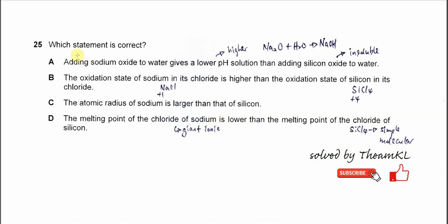Question 25. Which statement is correct? A. Adding sodium oxide to water gives a lower pH solution than adding silicon oxide to water.